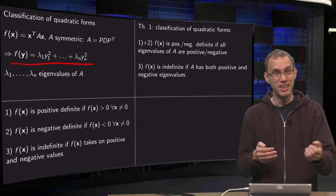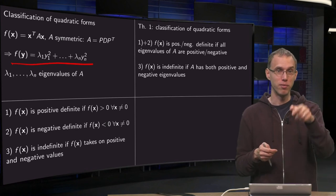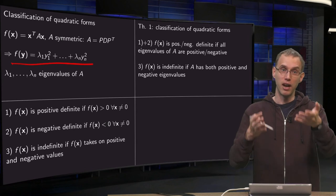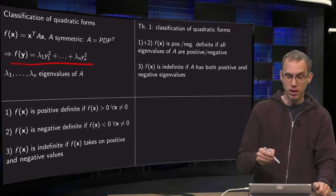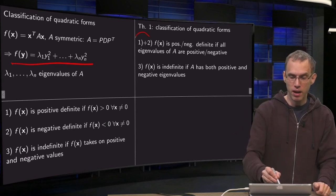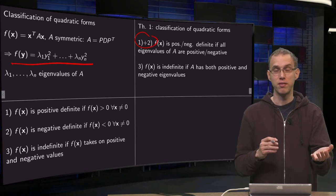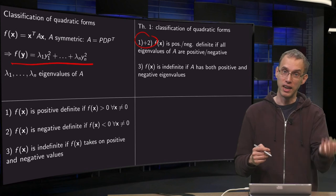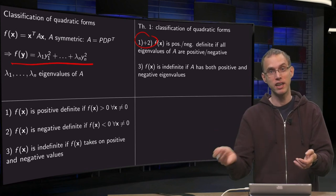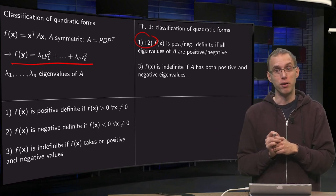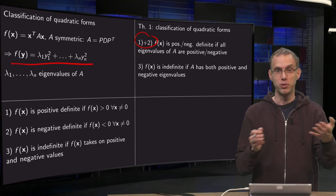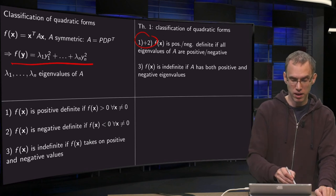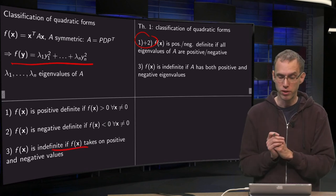Similarly, if all your eigenvalues are negative, you have a negative number times square plus a negative number times square and so on, so your f will always be negative. So that is 1 plus 2: f of x is positive definite if all your eigenvalues are positive, and f of x is negative definite if all your eigenvalues are negative. And if you have both positive eigenvalues and negative eigenvalues, you get an indefinite quadratic form. That is the third case.